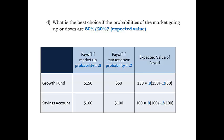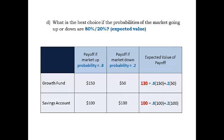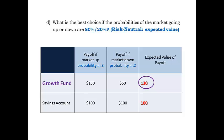These weighted averages are called expected values. Since the market will be going either up or down, the probabilities must add up to 100%. In our example, for the growth fund, the weights are the probabilities of 80% and 20%. The payoffs are $150 and $50, so the weighted average is 80% times 150 plus 20% times 50, giving an expected value of $130. Comparing the expected values for each alternative, our decision maker chooses the best. For our example, the growth fund has the best expected value, given 80% up and 20% down probabilities.